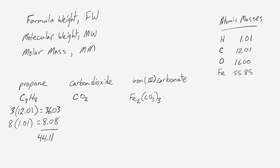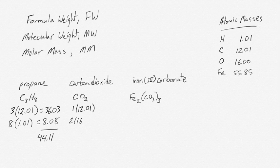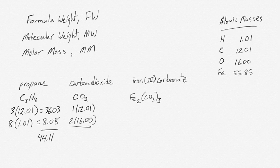With carbon dioxide, similar process. We have one times the mass of carbon, and we have two oxygens, so we have two times the mass of oxygen. We add all of those together, and we end up with 44, again, units of your choice.